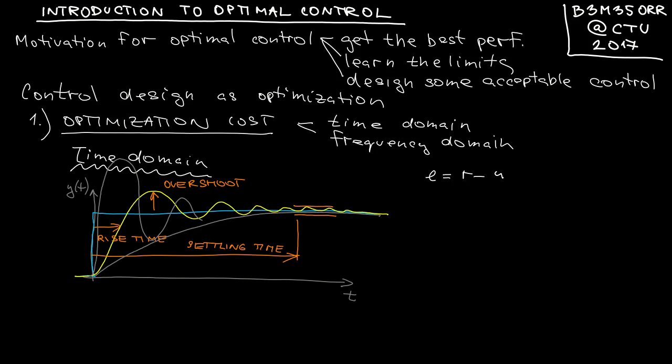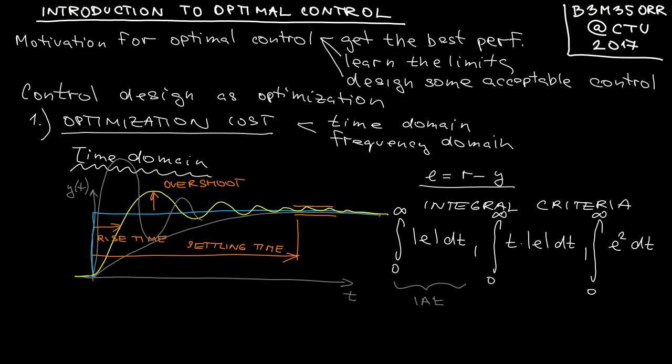You can handle this by imposing constraints on other characteristics, or you can use the so-called integral criteria after defining the regulation error as E. You can define your optimization criterion as the integral of absolute value of error, integral of time weighted absolute value of the error, or integral of squared error. These are given names like IAE, ITAE, and ISE. Now all these criteria only handle performance.